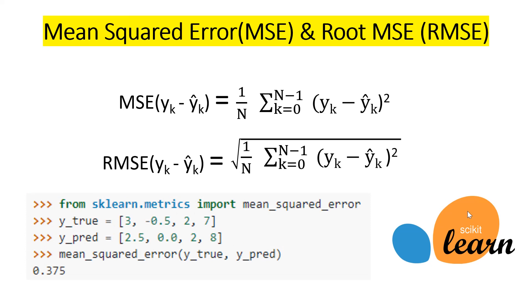Then we have the Mean Squared Error. The MSE is the sum of the square of the residuals divided by the number of samples. The Root Mean Squared Error is simply the square root of the MSE. These two metrics are more useful when comparing different regression models and are more efficient than MAE for penalizing large prediction errors. We can use scikit-learn to import the Mean Squared Error, and for RMSE we simply take the square root of the MSE.